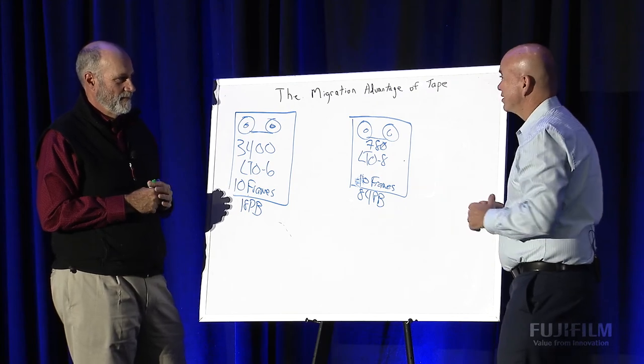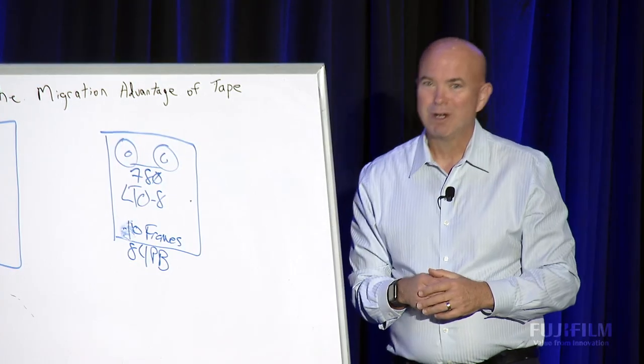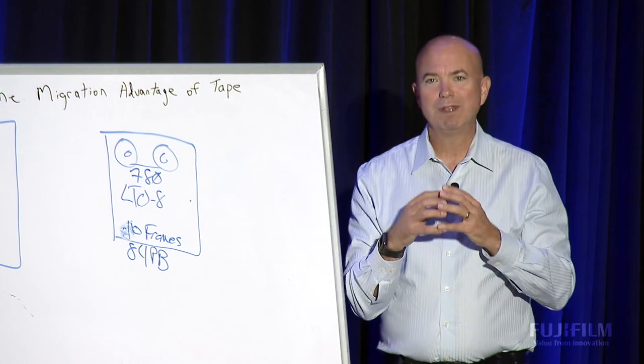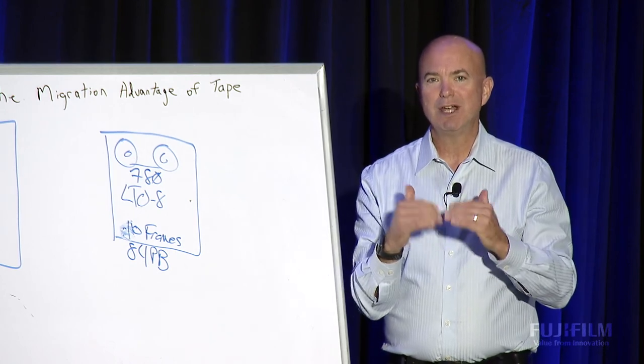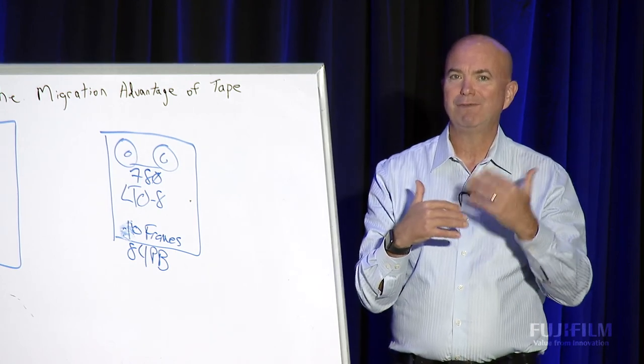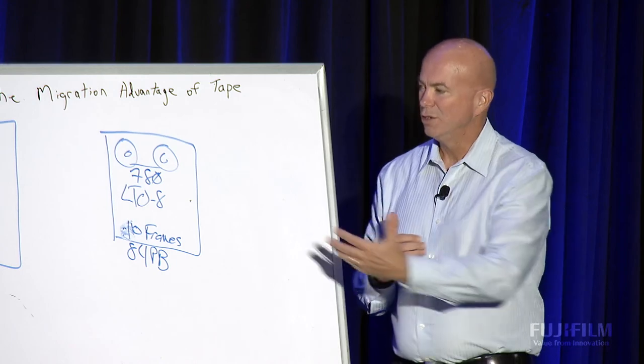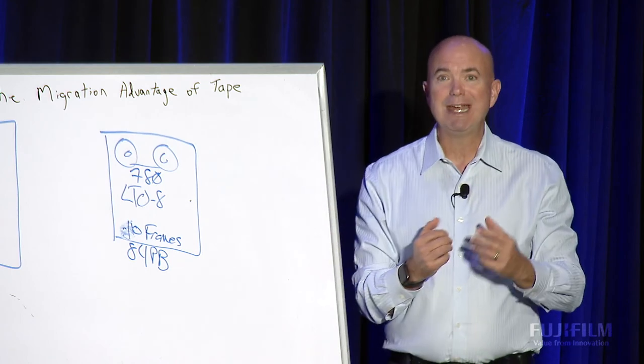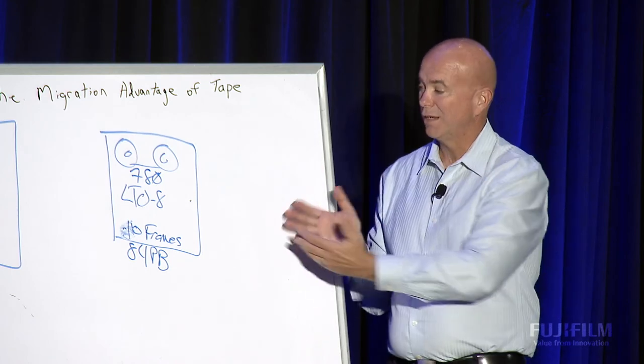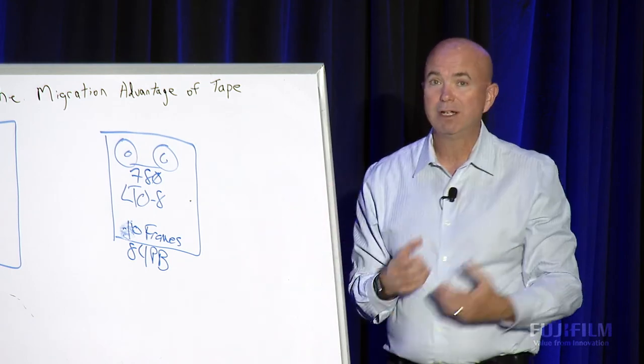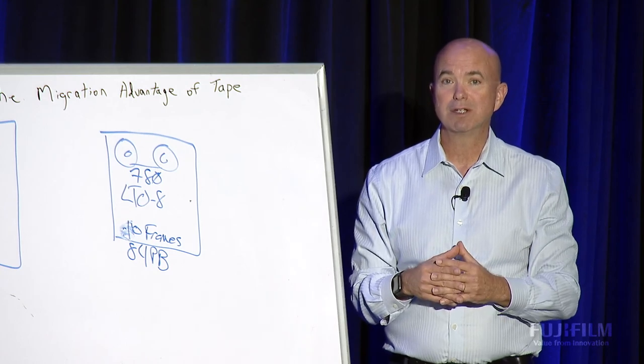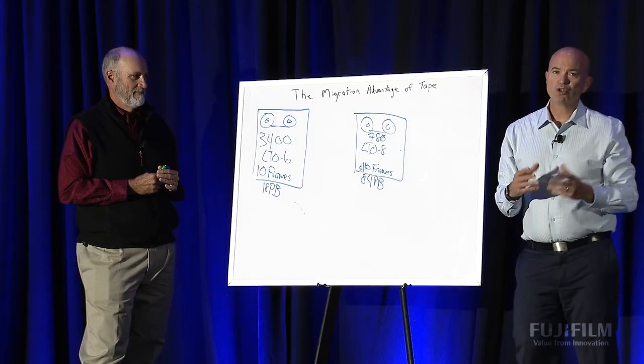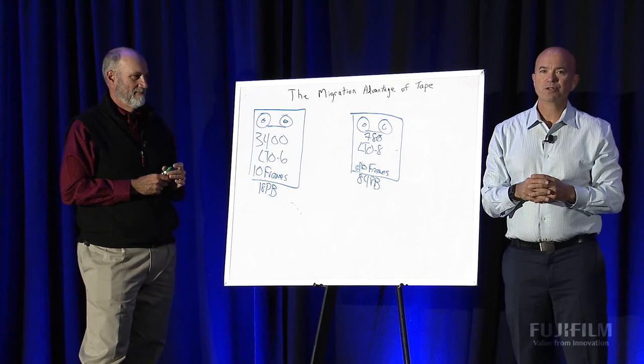Alan, thanks for joining us today. You're welcome. So there you have it again. One of the big advantages of tape is as the generations continue to advance and they get faster and more dense, you can do things like reduce from 3,400 tapes to 780 tapes. That's a huge savings and it gives, in the case of NOAA, a huge opportunity for continued expansion. Thanks for joining us. I'm George Crump, Lead Analyst for Storage Switzerland.